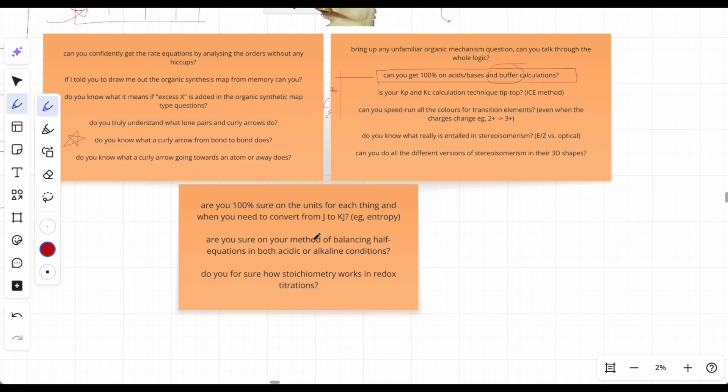Are you sure on your method for balancing half equations in both acidic and alkaline conditions? Do you even know how to do it? Also, do you know that charges on both sides need to be the same for that equation to be correct? You might have balanced it correctly, but if the charges aren't the same overall on both sides, it's wrong.